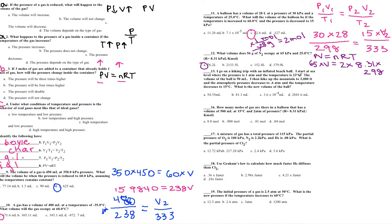I go on a hiking trip with an inflated beach ball. At sea level: P1 = 1 atmosphere, T1 = 23°C, and a given initial volume. Since I have three conditions changing, I use the combined gas law. Going up the mountain, pressure decreases to 0.6 atm and temperature decreases to 15°C. Initial temperature: 23 + 273 = 296 K.